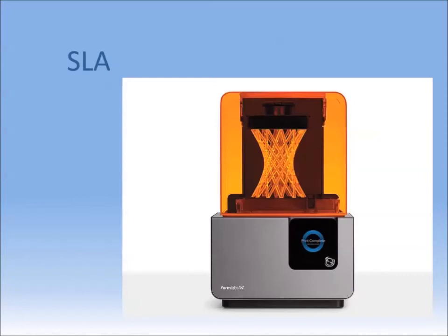An SLA printing process utilizes a laser that cures a layer at a time in a photoreactive resin, similar to DLP printing. But rather than curing an entire layer in one brief exposure, the laser, or lasers, must trace a beam across the entire layer image, typically resulting in longer print times. Resolutions suffer somewhat, as the width of a typical laser beam spot used in this process is around 140 microns, versus the pixel size of the DLP platform of around 30 microns.